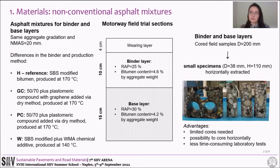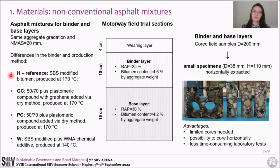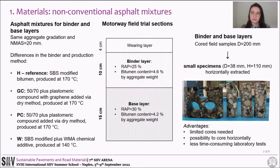The materials involved in this study are three non-conventional asphalt mixes. For comparison purposes, a reference SBS-modified hot-mixed asphalt mixture was added, as it is usually employed in Italian motorways. A total of eight mixes were investigated, four for the binder layer and four for the base layer. They were characterized by the same aggregate gradation containing reclaimed asphalt pavement, whereas the mixes differ for the binder and the production methods.